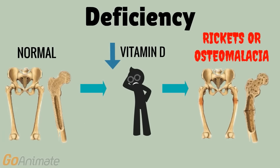Too little vitamin D results in the softening of the bones. This disease is known as rickets in children and osteomalacia in adults.